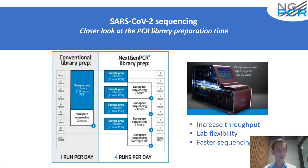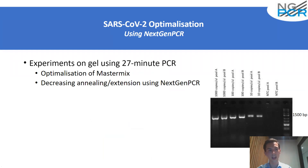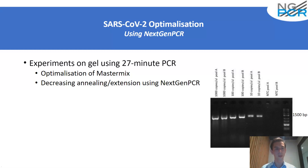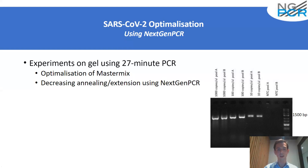That is what we did in our laboratory in collaboration with Amsterdam University Medical Center and Avans University of Applied Science. We performed initial experiments on an agarose gel using our 27-minute PCR and optimized PCR master mixes for the NextGen PCR, decreasing the annealing and extension times. Looking at the agarose gel on the right side, we get clear amplification even at 10 copies per microliter. However, these first experiments were performed using synthetic RNA, so we had to test on clinical samples and perform sequencing to understand genome coverage.